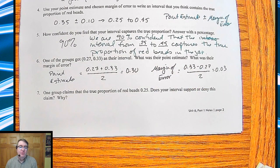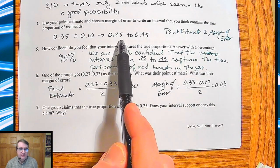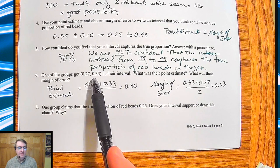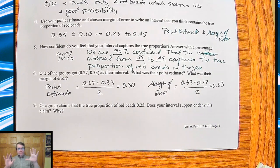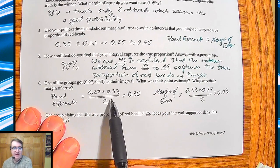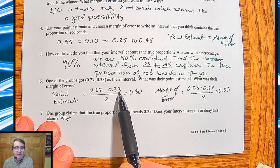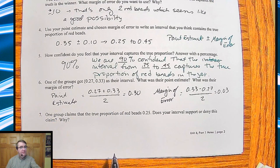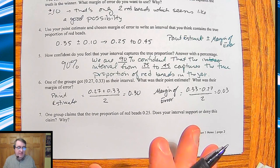And then last but not least, one group claims the true proportion of red beads is 0.25. Does your interval support or deny this claim, and why? So our interval back up over here does contain that, so we're okay. This other group doesn't have it, so they're not okay. However, let's say, for example, they had a 90% confidence interval. If they had a 90% confidence interval, that means that 90% of the time when you take a sample, it's going to fall between 0.27 and 0.33. So what happens the other 10% of the time? It doesn't fall in between them. So if they keep on doing this over and over and over again, and you get the occasional one outside your confidence interval, that's fine.